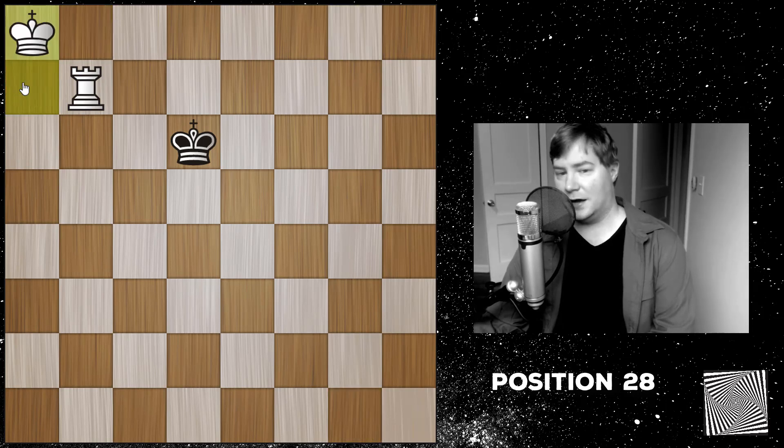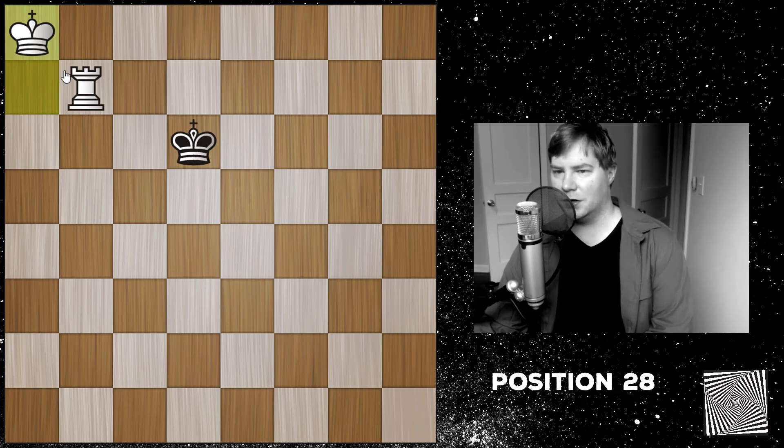He has to give up his rook for that queen. And now this should be an easy win, as I covered in a previous video, how to mate with the rook.